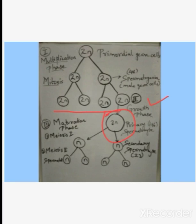Now maturation phase starts. In maturation phase, the primary spermatocytes undergo meiosis I. In meiosis I, the chromosome number gets reduced to half. Meiosis is a reductional division. In meiosis I, one cell divides into two cells - from diploid it becomes haploid. These newly formed cells are called secondary spermatocytes and they contain 23 chromosomes each.